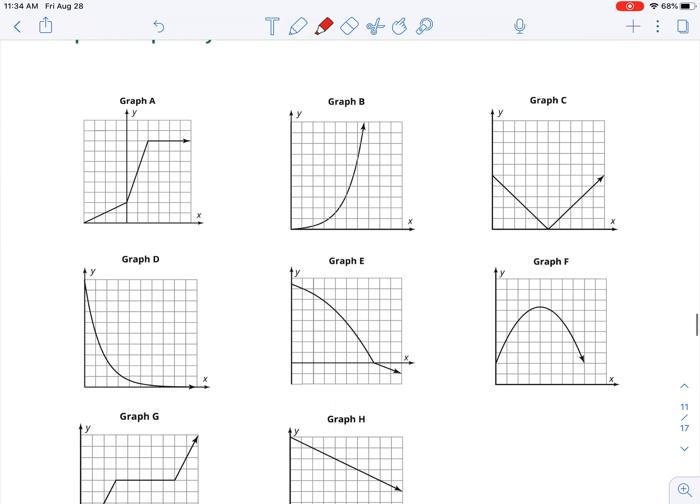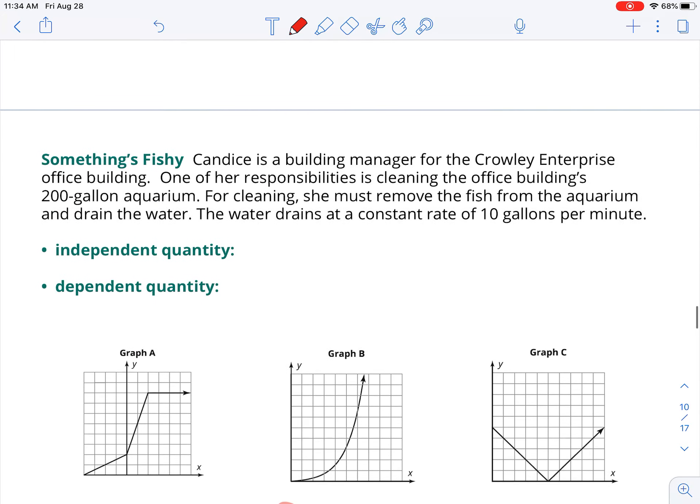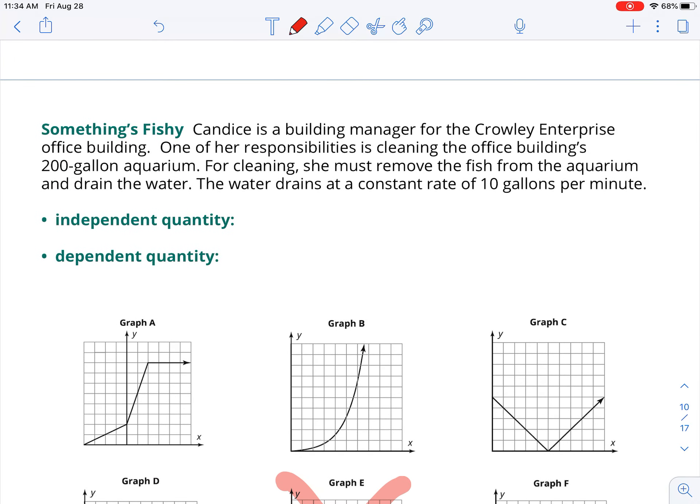You obviously already eliminated graph E, so it's not going to be graph E. Now let's read it. Something's fishy. Candice is the building manager for the Crowley Enterprise Office Building. One of her responsibilities is recleaning the office building's 200-gallon aquarium. For cleaning, she must remove the fish from the aquarium and drain the water. The water drains at a constant rate of 10 gallons per minute.